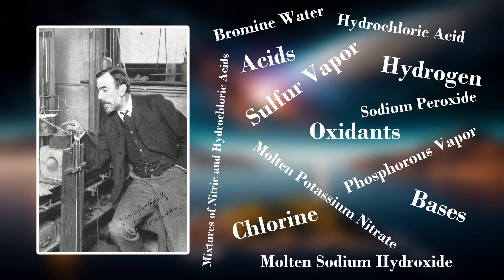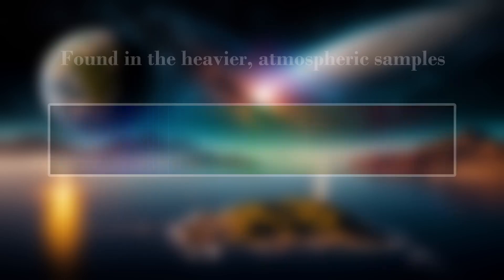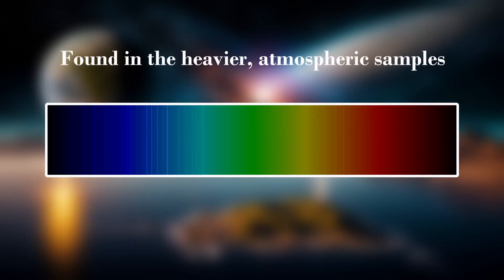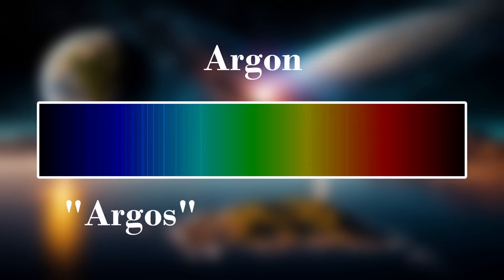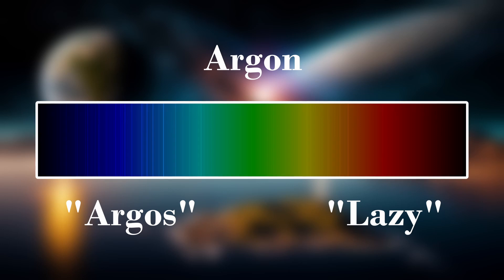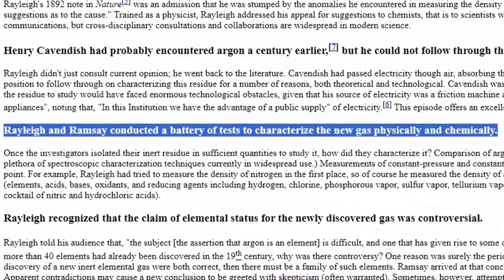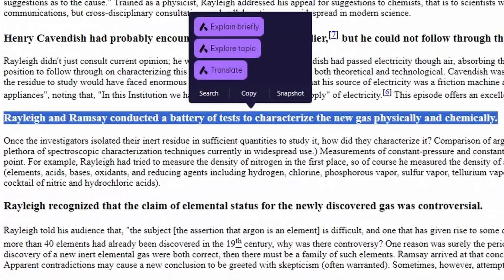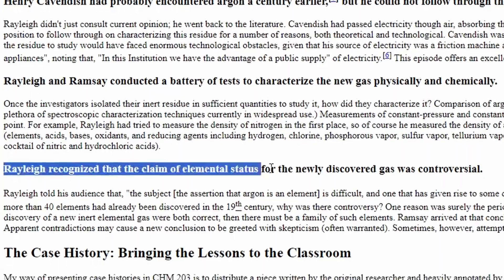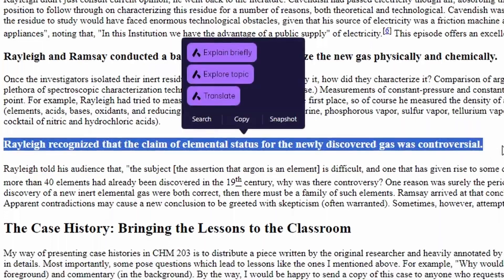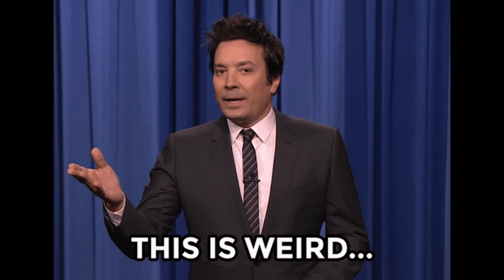Eventually, they came to the conclusion that they had discovered a new element in the more dense atmospheric sample and they named it Argon, coming from the Greek word Argos, meaning lazy. Although the research and testing done by the two scientists was extremely thorough, the conclusion of there being a new element was still a controversial one at the time, which was sort of unusual.